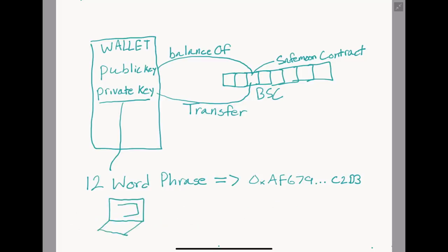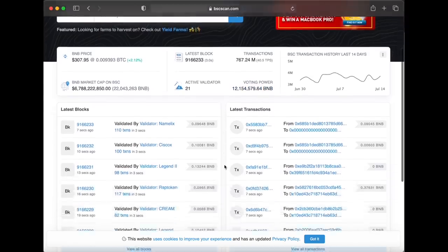If you go on BSCscan, you can see and do pretty much everything that Trust Wallet does. It's just not as pretty and user-friendly. On BSCscan you have access to every contract on the Binance Smart Chain.